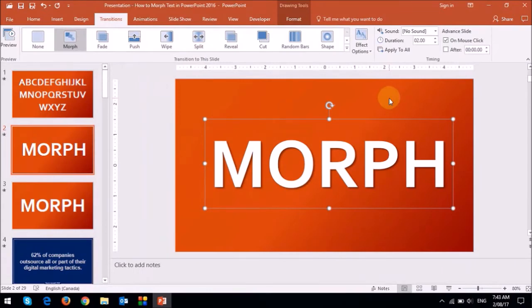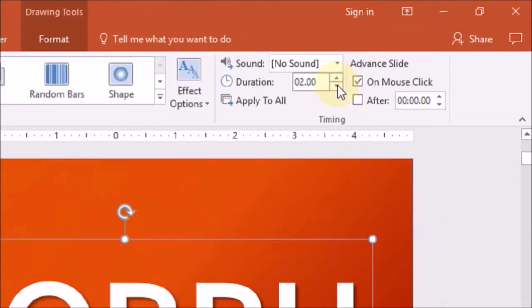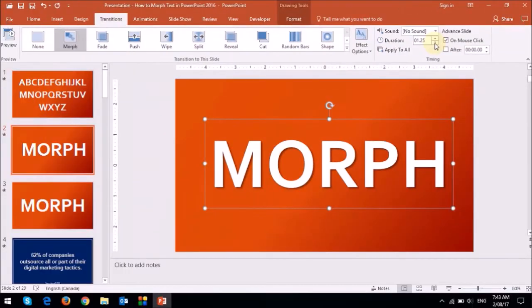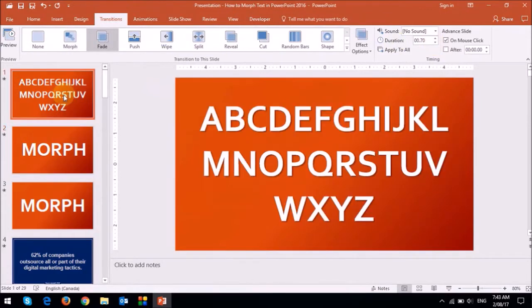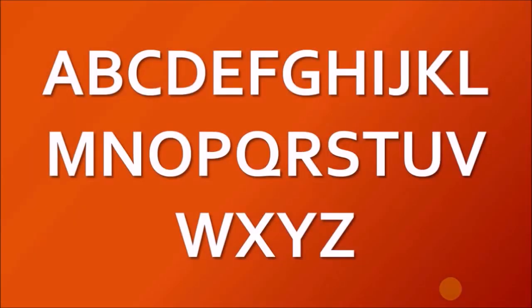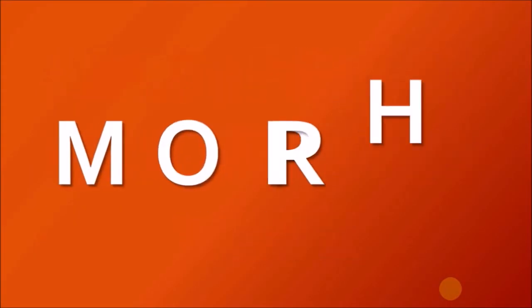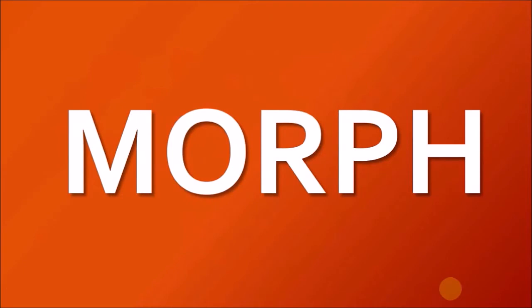You can also control or adjust the duration of the animation using these arrows right here. Now if I play the two slides, I'm going to click on the first slide and then click the slideshow button. And when I advance the slide, you'll see that it morphs and looks pretty cool.